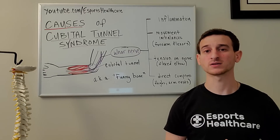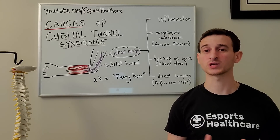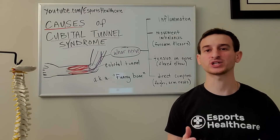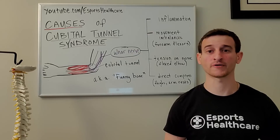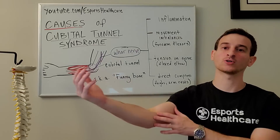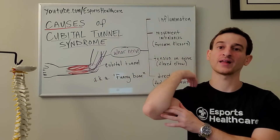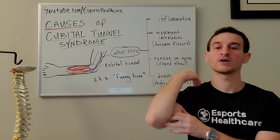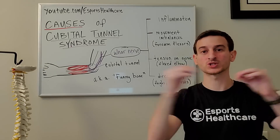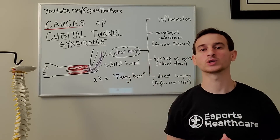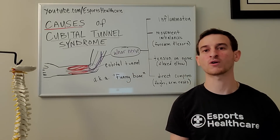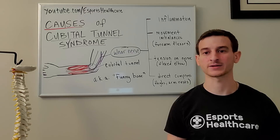Another factor leading to cubital tunnel syndrome is increased tension on the ulnar nerve. When the elbow is held in a flexed position for a long period of time, the ulnar nerve becomes taut, which will cause symptoms into the forearm and down the hand.